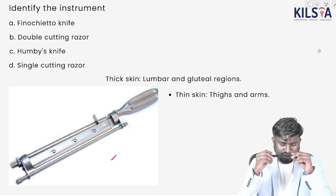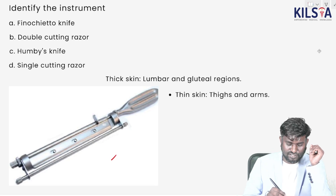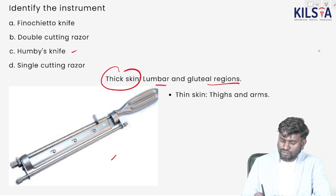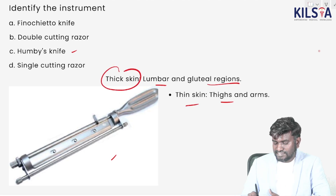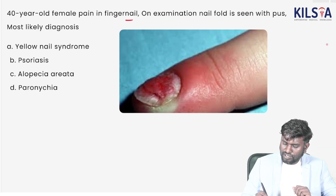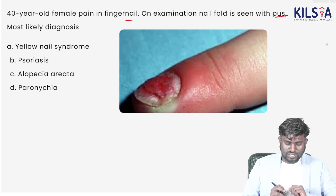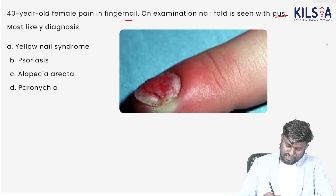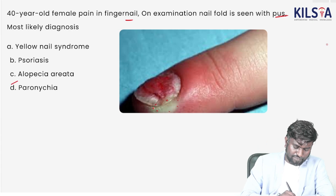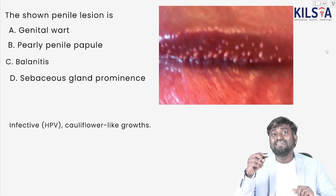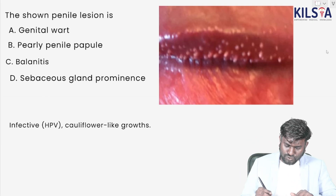Identify the instrument shown — options are Humby's knife (double-cutting razor), Humby's knife (single-cutting razor), or phenol sheet knife. The answer is Humby's knife for thick skin. Remember: lumbar and gluteal regions are preferred for thick skin grafts; thighs and arms are preferred for thin skin. A 40-year-old female with fingernail pain and pus in the nail fold — the diagnosis is paronychia, which can be due to trauma or infection.